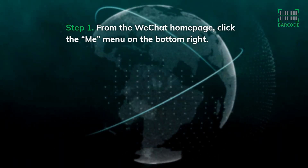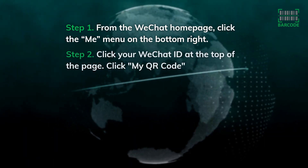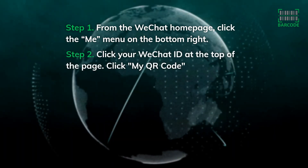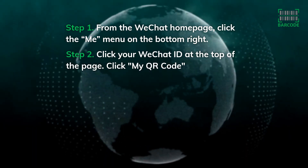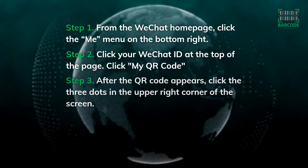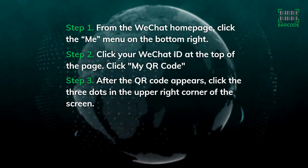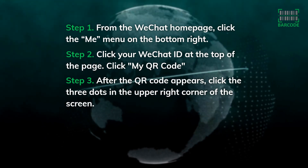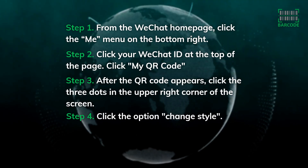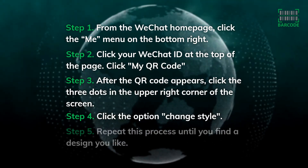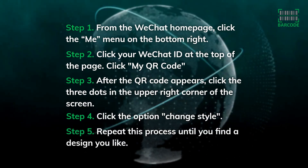Step 1: From the WeChat home page, click the Me menu on the bottom right. Step 2: Click your WeChat ID at the top of the page, then click My QR code. Step 3: After the QR code appears, click the three dots in the upper right corner of the screen. Step 4: Click the option Change Style. Step 5: Repeat this process until you find a design you like.